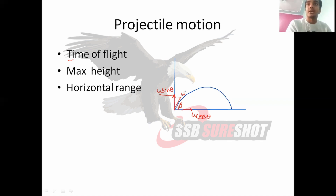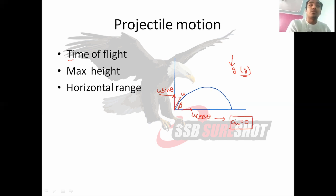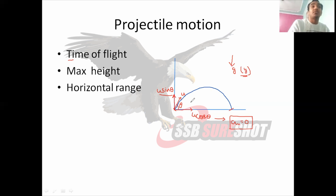One more thing given to us is acceleration due to gravity, denoted by small g, which always acts towards the surface. This acts only in the y-direction. In the x-axis, that is the horizontal direction, there is no acceleration — acceleration in the horizontal direction is zero. For time of flight, in the y-direction the particle starts, goes up to some height, descends, and returns to zero displacement.